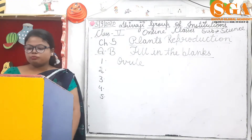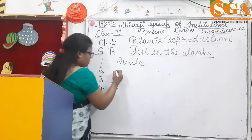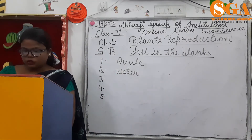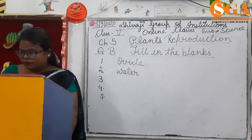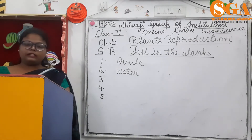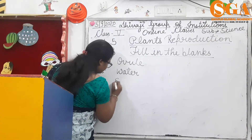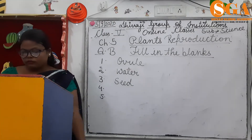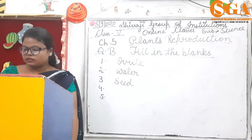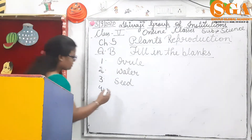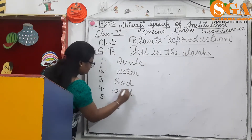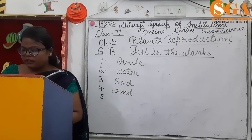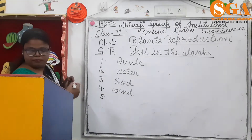Second: coconut is dispersed by water. Third: the ovule inside the ovule develops into seed. Fourth: wing and hair are found in seeds that are dispersed by wind. Fifth: seeds of pea and poppy get dispersed by explosion.